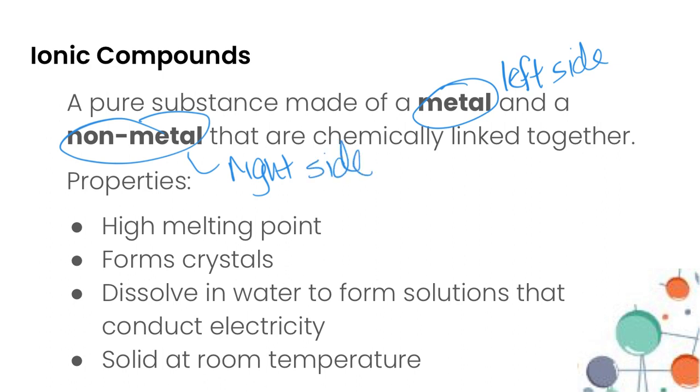I'll show you how an ionic compound is formed in a moment, so let's just talk about the properties that they have. They have very high melting points in the hundreds if not thousands of degrees Celsius ranges. They also form crystals, and if you take chemistry in later courses you'll learn a little bit more about what those crystal structures look like.